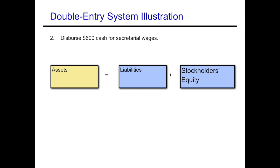Example two: disburse $600 cash for secretarial wages. The company is paying out $600 in cash and wages expense is going up. So cash is going down — assets are decreasing — and expenses are increasing, meaning stockholders' equity is decreasing. Our accounting equation is still in balance.